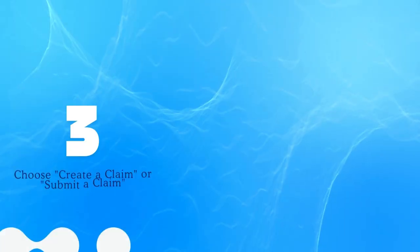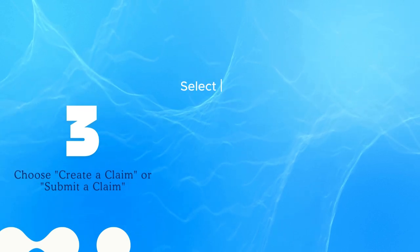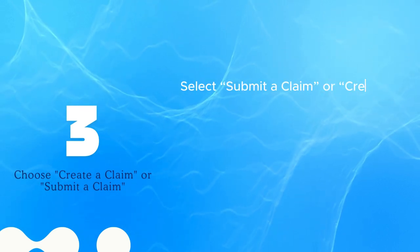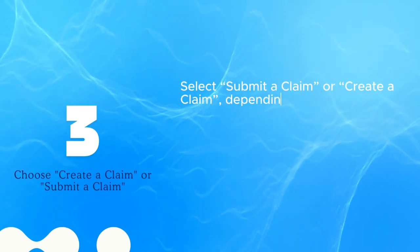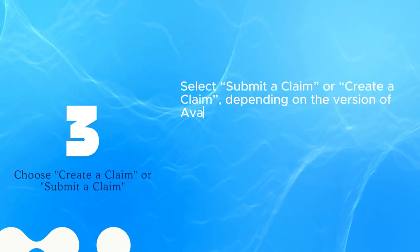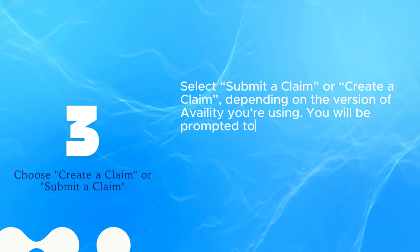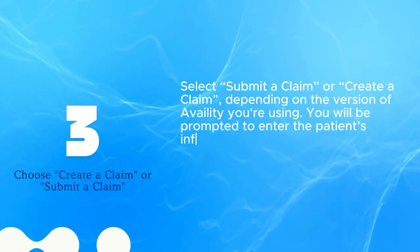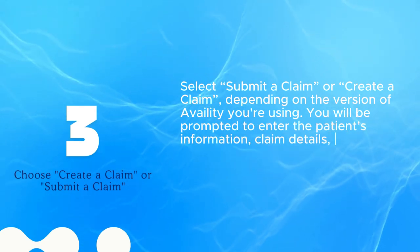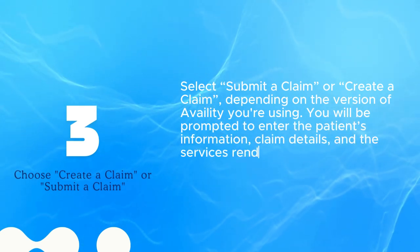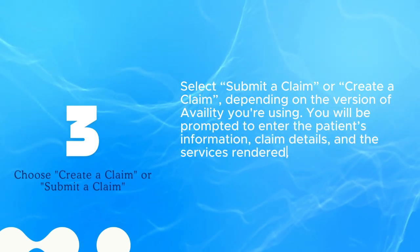Step 3: Choose Create Claim or Submit a Claim. Select 'Submit a Claim' or 'Create Claim' depending on the version of Availability you are using. You will be prompted to enter the patient's information, claim details, and the services rendered.